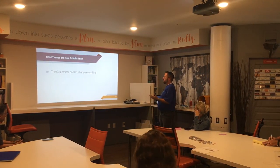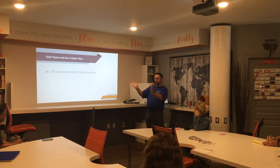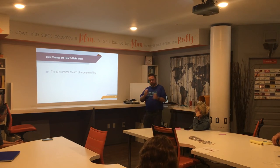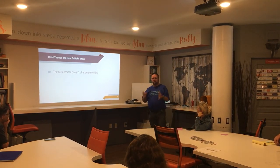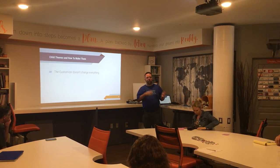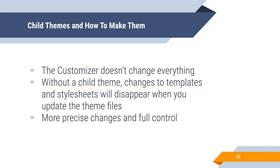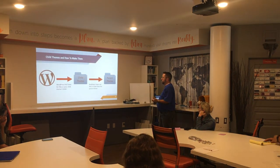Now, child themes and how to make them. The customizer — that side menu under Appearance > Customize in WordPress — doesn't always let you change everything. You have to affirmatively add things to it, and some themes have very minimal options. If you upgrade a theme, you lose all of your customization work. Child themes solve this — a child theme branches your parent theme and does just certain things for you. With child themes you get more precise changes and full control; it's almost like building a custom theme based on somebody else's theme.